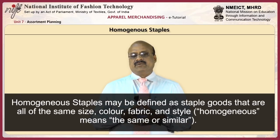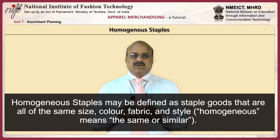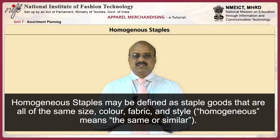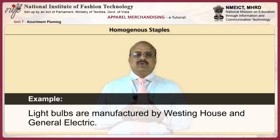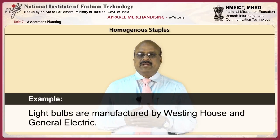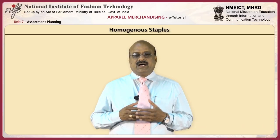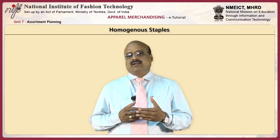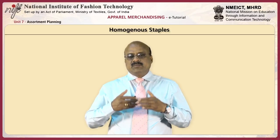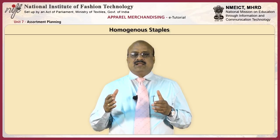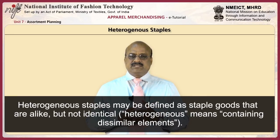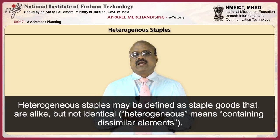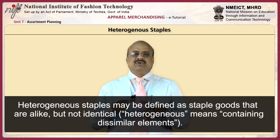Homogeneous staples may be defined as staple goods that are all of the same size, colour, fabric, and style — homogeneous means the same or similar. For example, light bulbs manufactured by Westinghouse and General Electric: the 100-watt bulbs produced by each company are alike in that they are the same size, provide the same amount of light, and fit into standard light bulb sockets. Heterogeneous staples may be defined as staple goods that are alike but not identical — heterogeneous means containing dissimilar elements. For example, shoe laces of the same length and width may come in assorted colours, patterns, and textures.